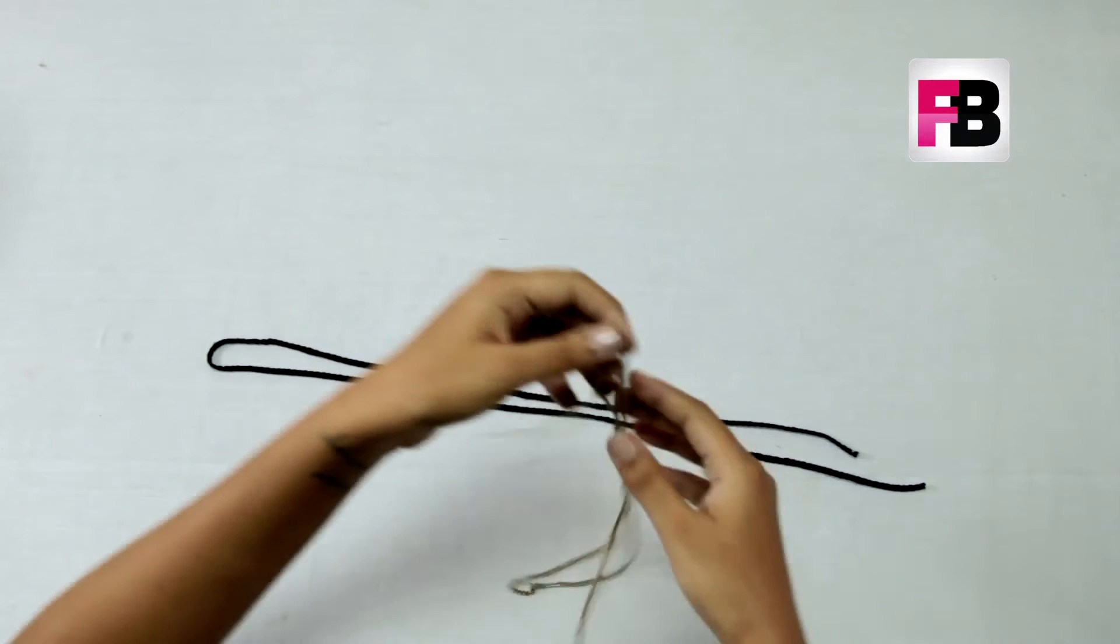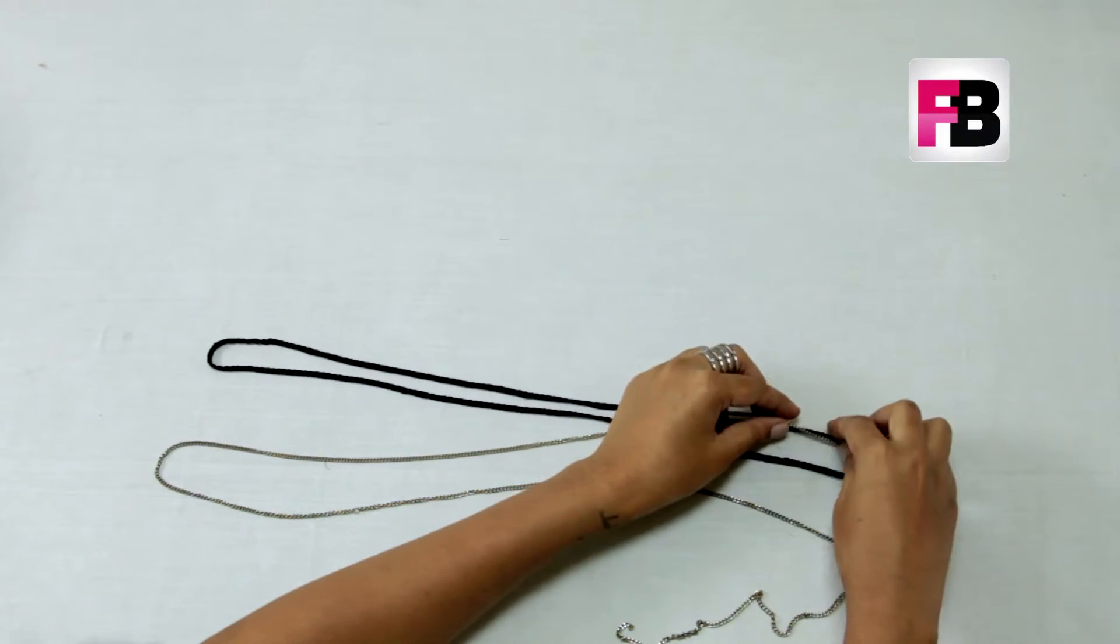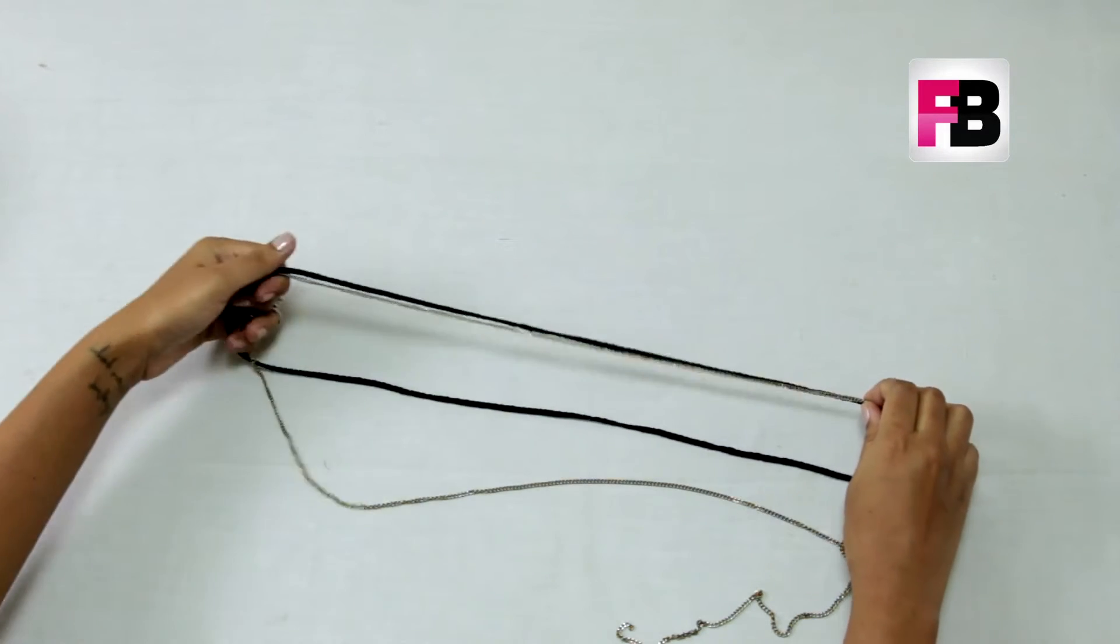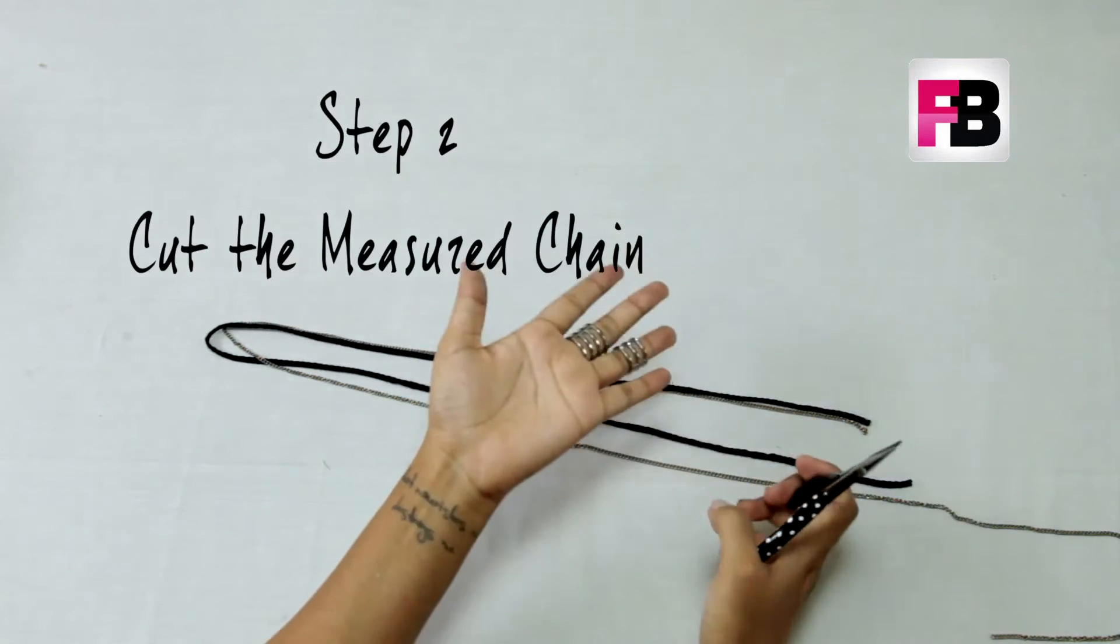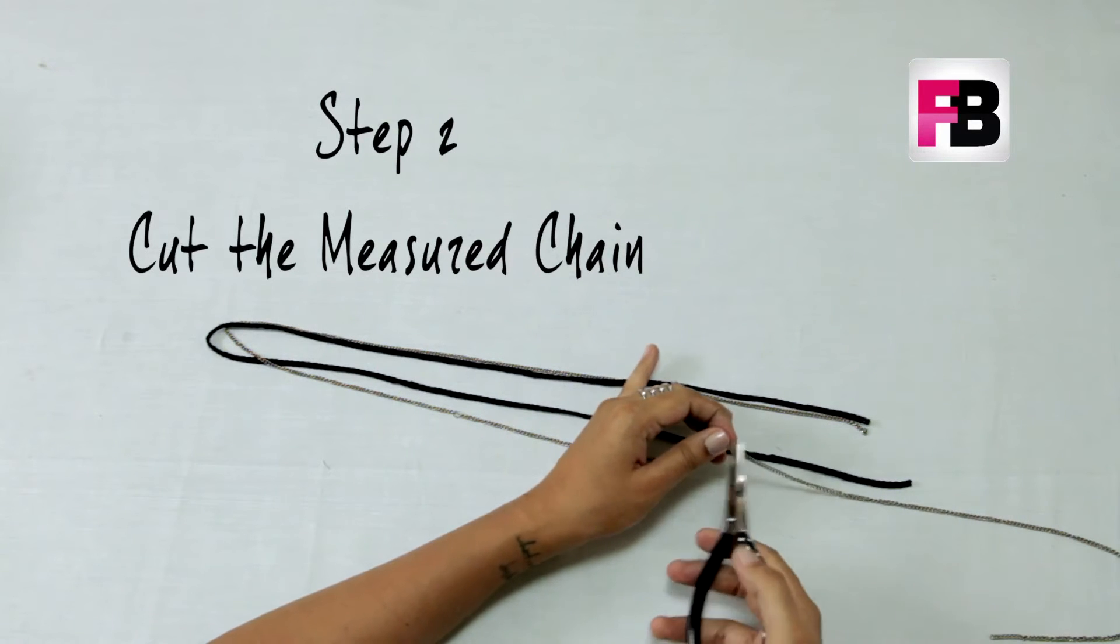Next you need the chain. I wanted it a little shorter than the rope, so you can measure it just like this. I'm going to be using a flat nose plier to separate the links. If you want, you can cut it as well.